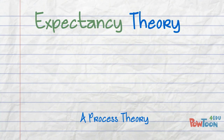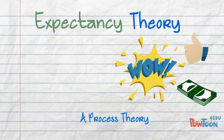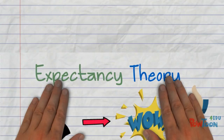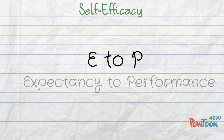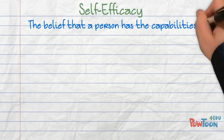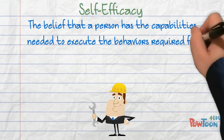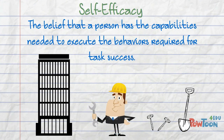Expectancy theory is a process theory that states that motivation is determined by the outcomes that people expect to occur as a result of their actions on the job. Expectancy is shaped by self-efficacy, sometimes called the E to P or expectancy to performance — the belief that a person has the capabilities needed to execute the behaviors required for task success. Self-efficacy depends on an analysis of the task and one's own resources.